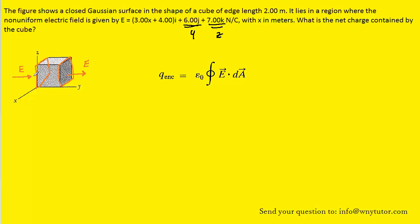When the electric field enters the cube, we get negative electric flux (symbolized by the Greek letter phi), and when it exits the surface we get positive electric flux. Because the electric field is constant, the magnitude of the negative flux entering the left face equals the magnitude of the positive flux exiting the right face — one is negative and the other positive. So the net flux in the y-direction turns out to be zero, and we can disregard the electric flux contribution in the y-direction.